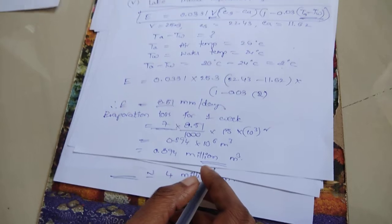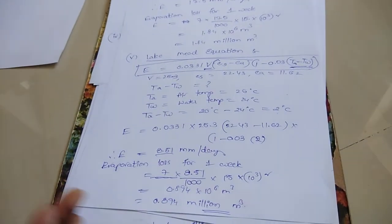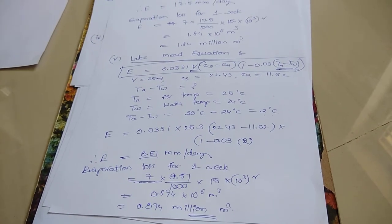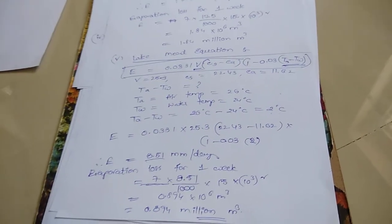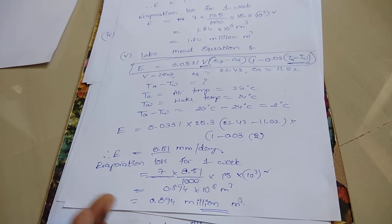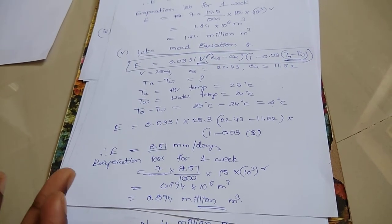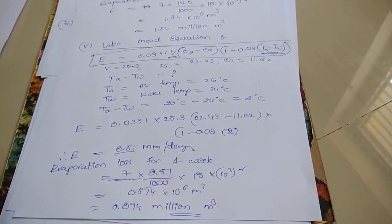So, these 5 formulas are the empirical equations. You have to find out the evaporation. Estimation of evaporation. So, it is very important. These equations are also used for the gate examination point of view. Thank you.